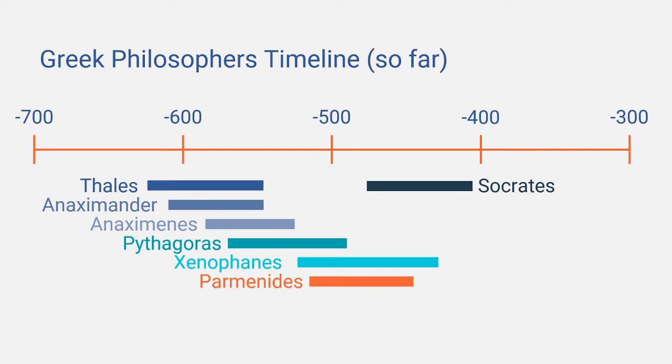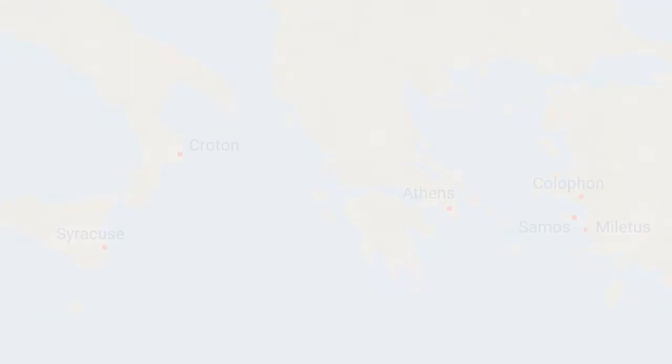Parmenides lived somewhere between 515 and 445 BC, that is after the Milesians, and together with Xenophanes he bridges the gap between Pythagoras and Socrates. As is often the case, scholars speculate if he was a student of Xenophanes or some other philosophers, but there is no direct evidence to support that.